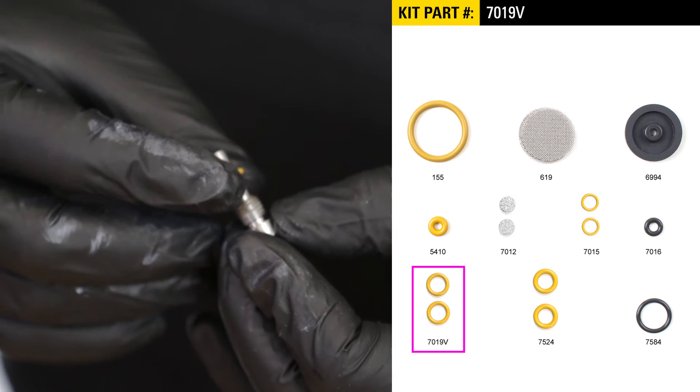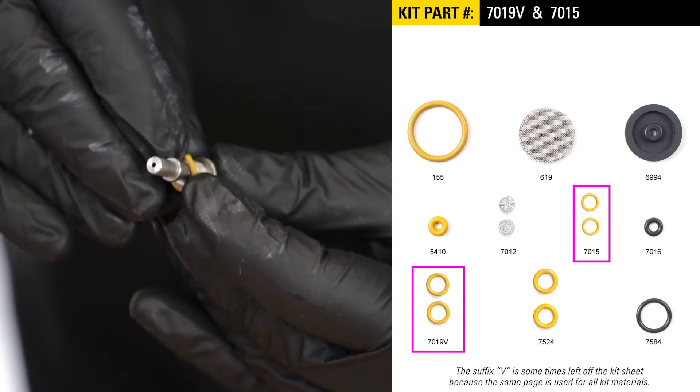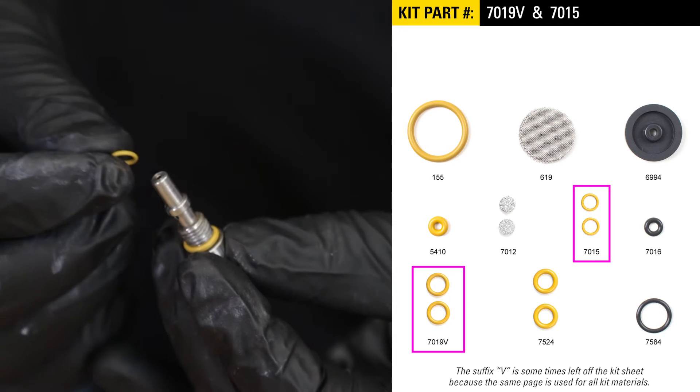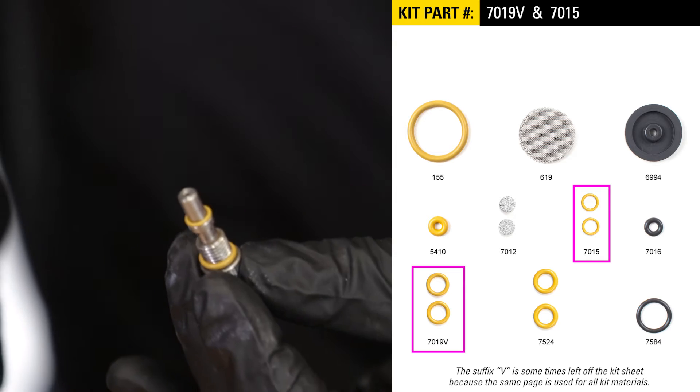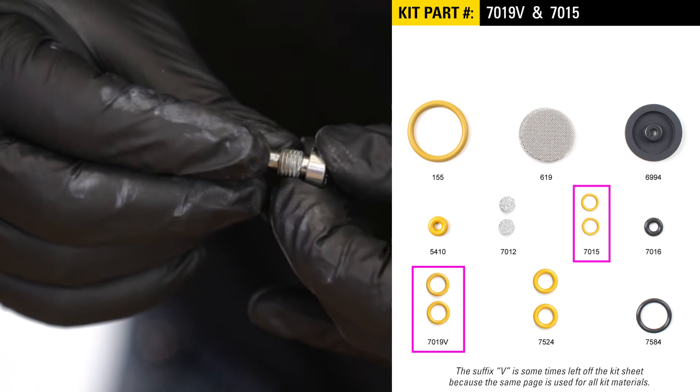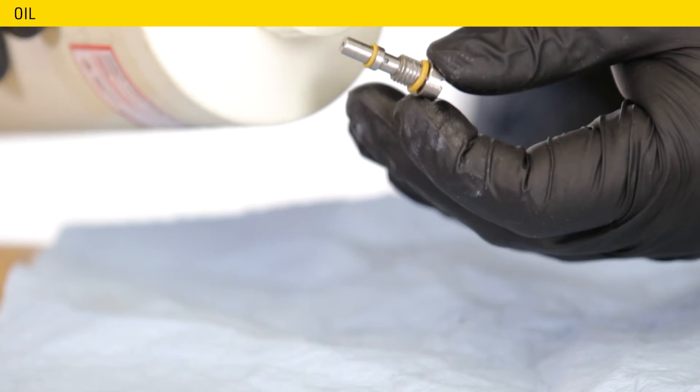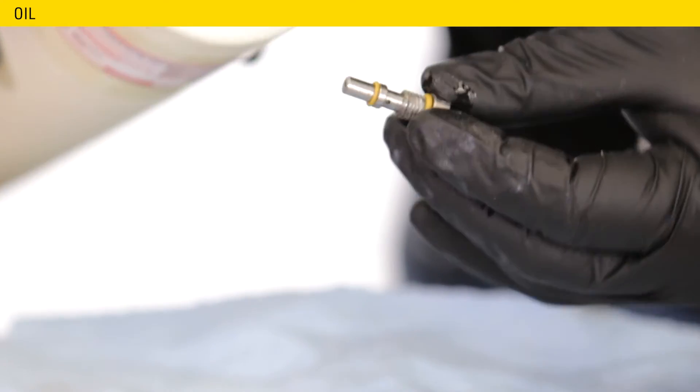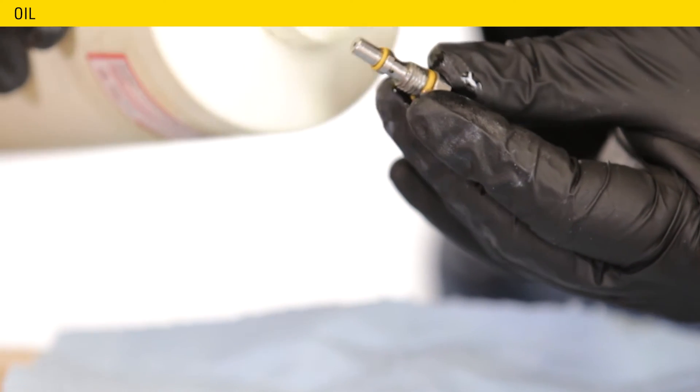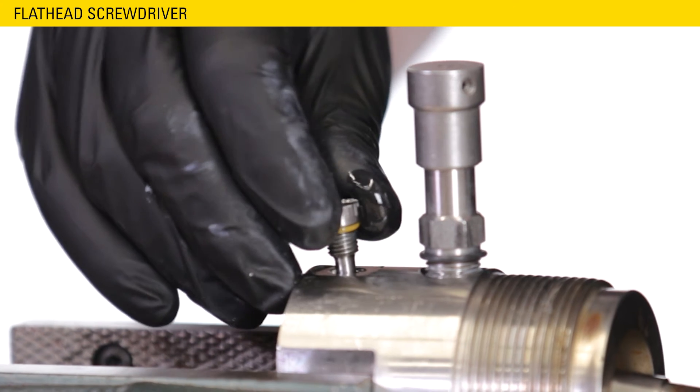Install a 7019V O-ring and the 7015V O-ring on each seat. Lightly oil both O-rings.